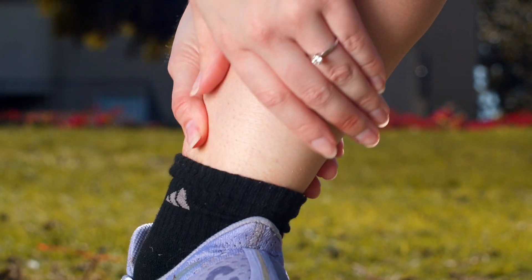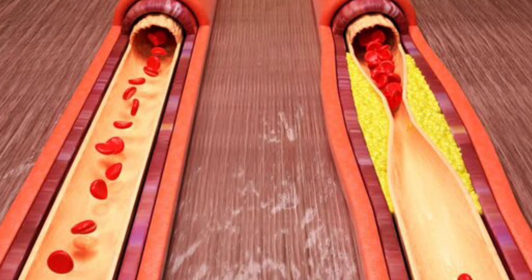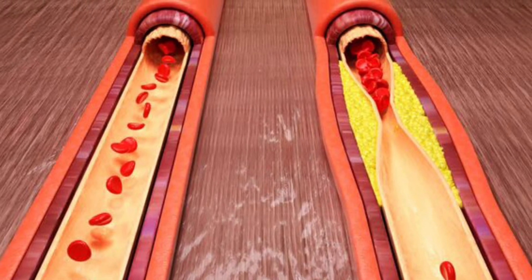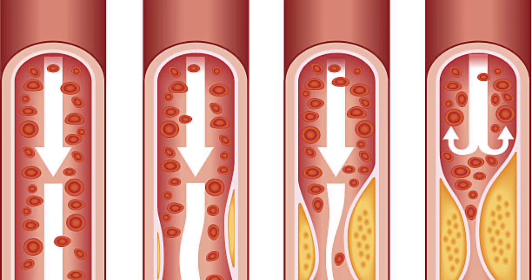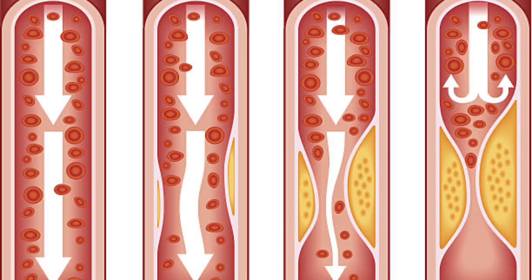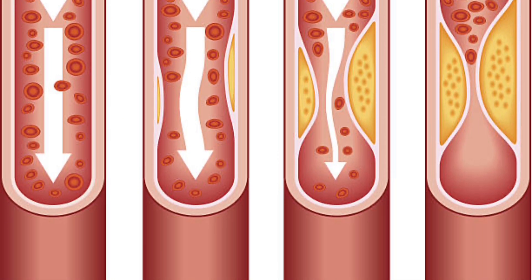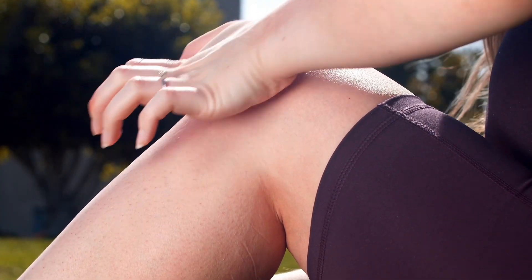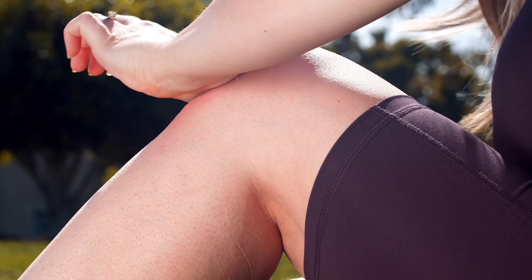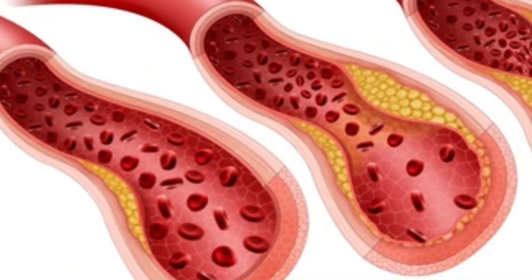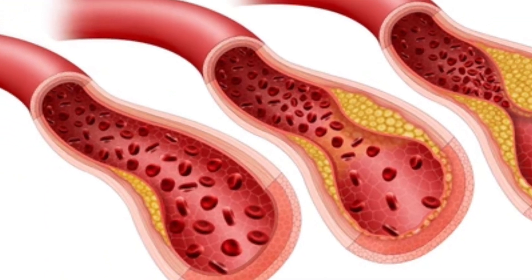Peripheral artery disease is a common disease that most often affects men over the age of 50, but it can also occur in women. People are at higher risk if they have a history of abnormal cholesterol levels, diabetes, heart disease or ischemic heart disease, high blood pressure or hypertension, kidney disease associated with hemodialysis, smoking, stroke, or cerebrovascular disease.